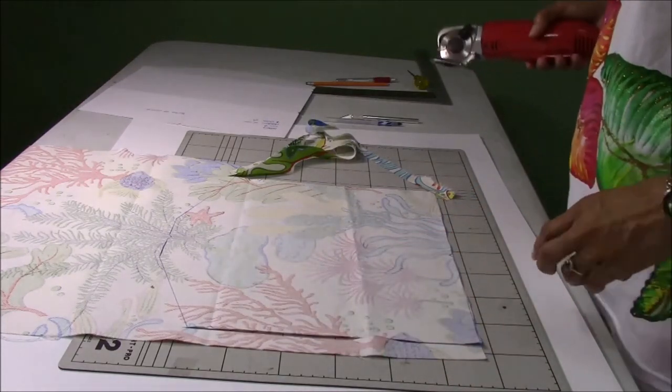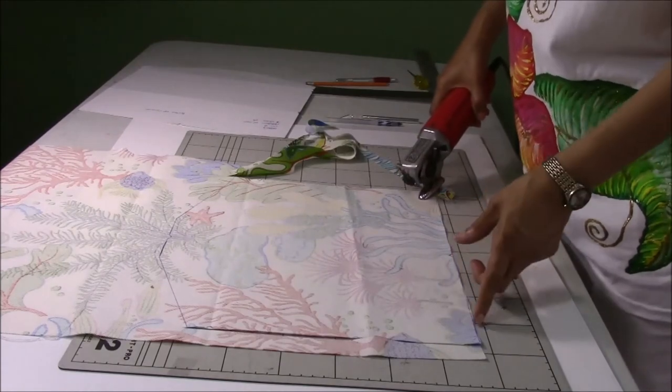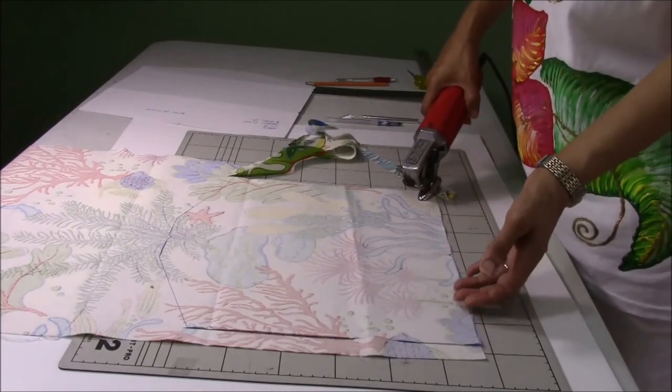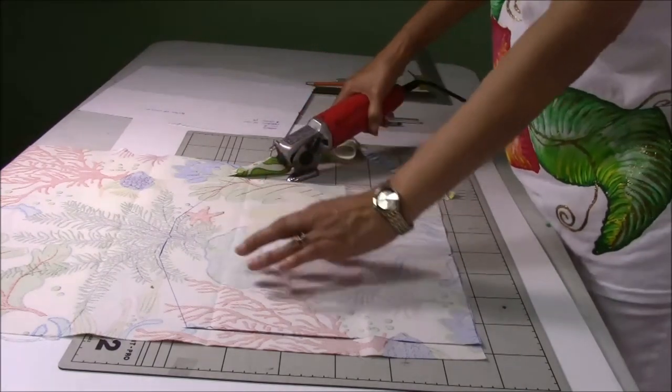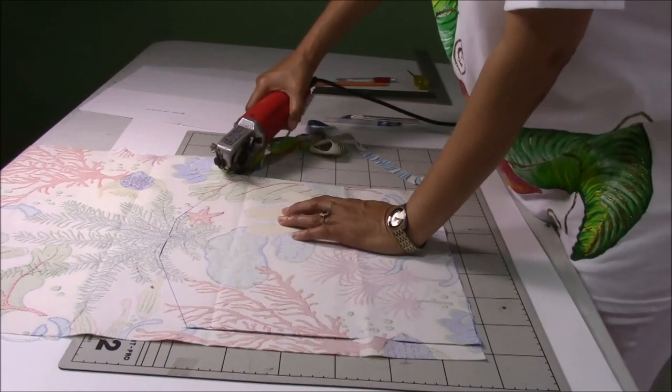Now, if you don't get it exactly on the line, that's fine. So long as you're not too shy, you're not too far in. If you're too far out, you can always trim. But if you're too far in, your webbing or binding is not going to be able to cover it.